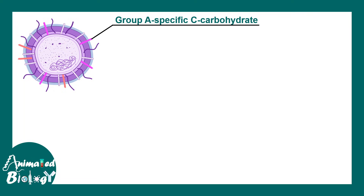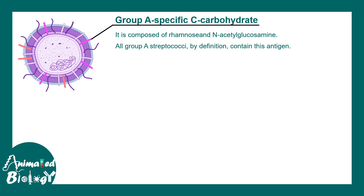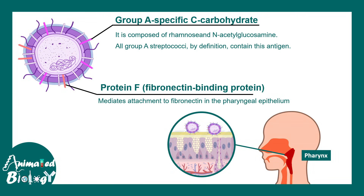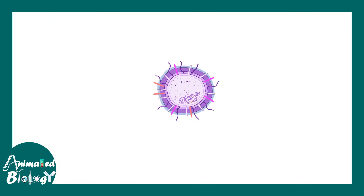On the membrane there is a Group A-specific C carbohydrate, composed of a complex polysaccharide containing rhamnose and N-acetylglucosamine. By definition, all Group A streptococci contain this particular antigen — consistent with the Lancefield classification discussed earlier. There is also Protein F, or fibronectin-binding protein, which allows the attachment of the bacteria to membranes such as the pharyngeal epithelial membrane, explaining why pharyngitis is very common with this infection.